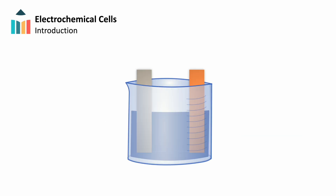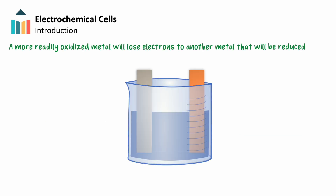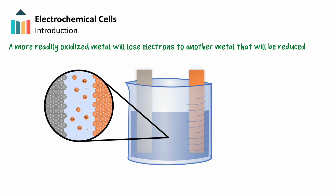When two different metals undergo a redox reaction, the more readily oxidized metal will lose electrons and transfer them to the other metal, which will be reduced. For example, the more reactive zinc will transfer electrons to the less reactive copper.